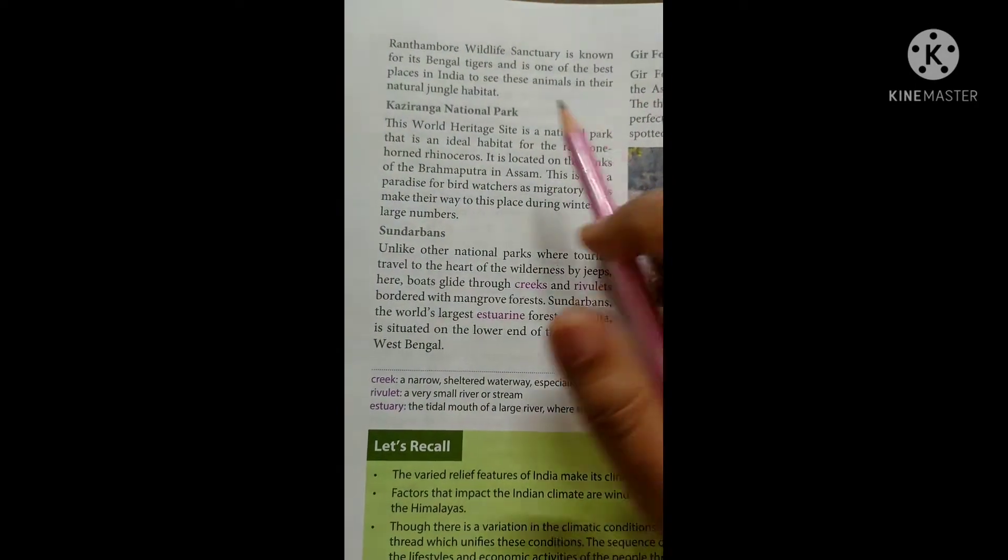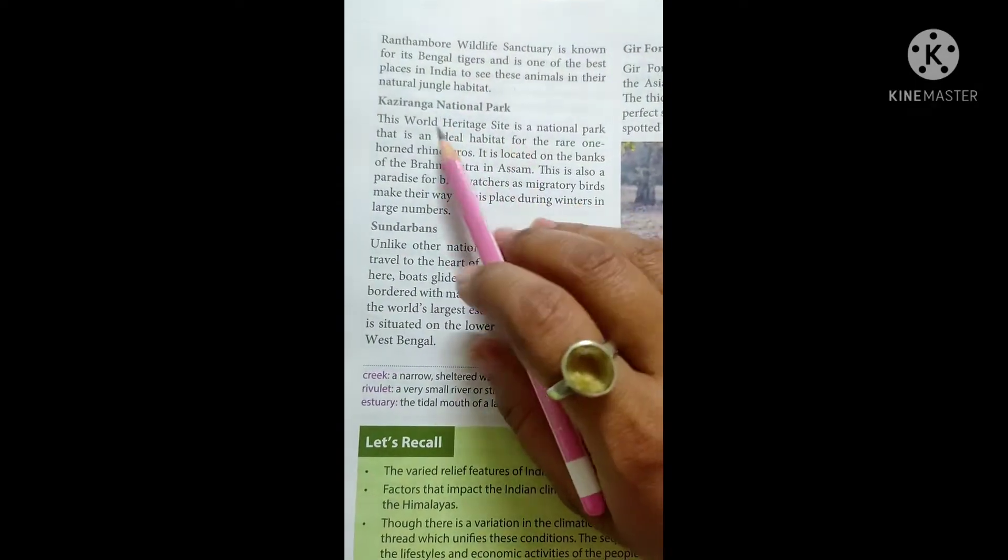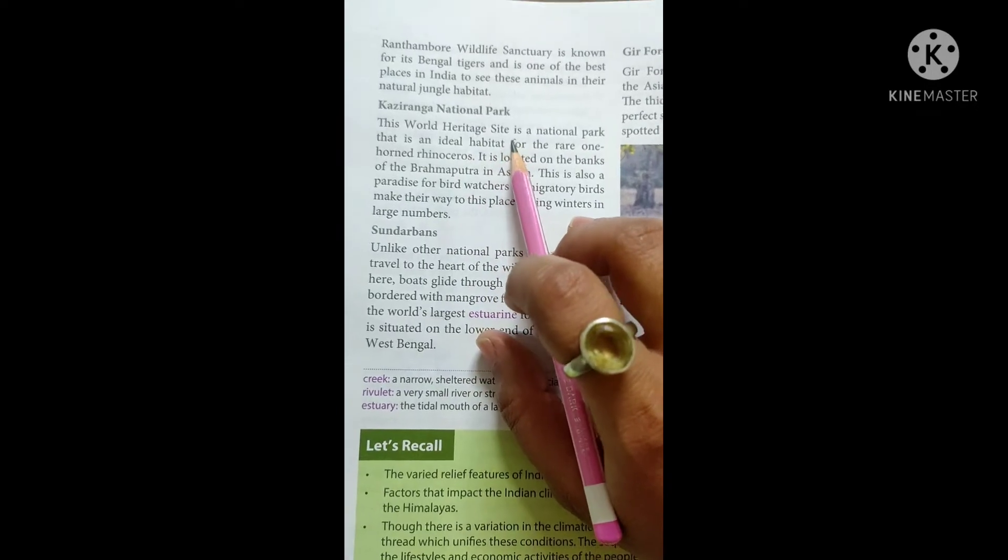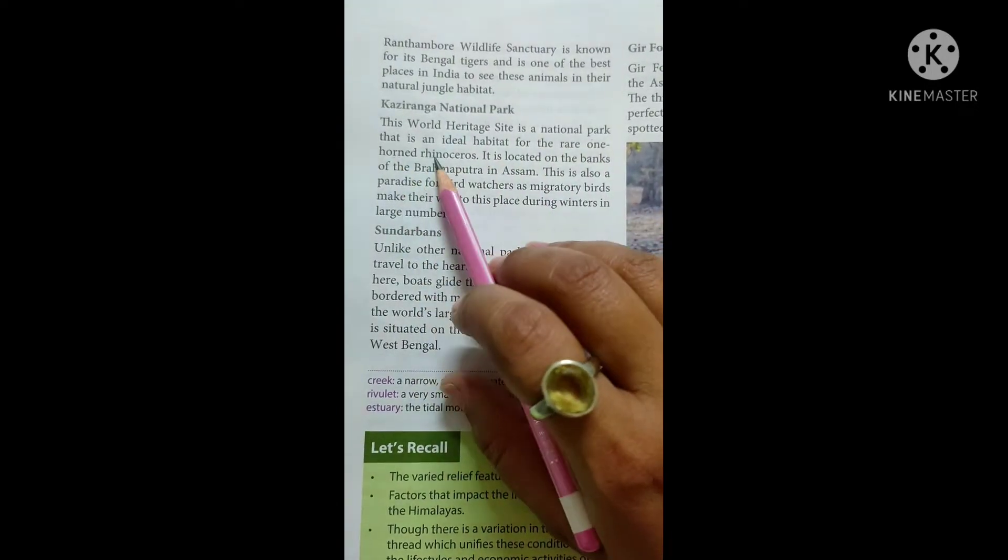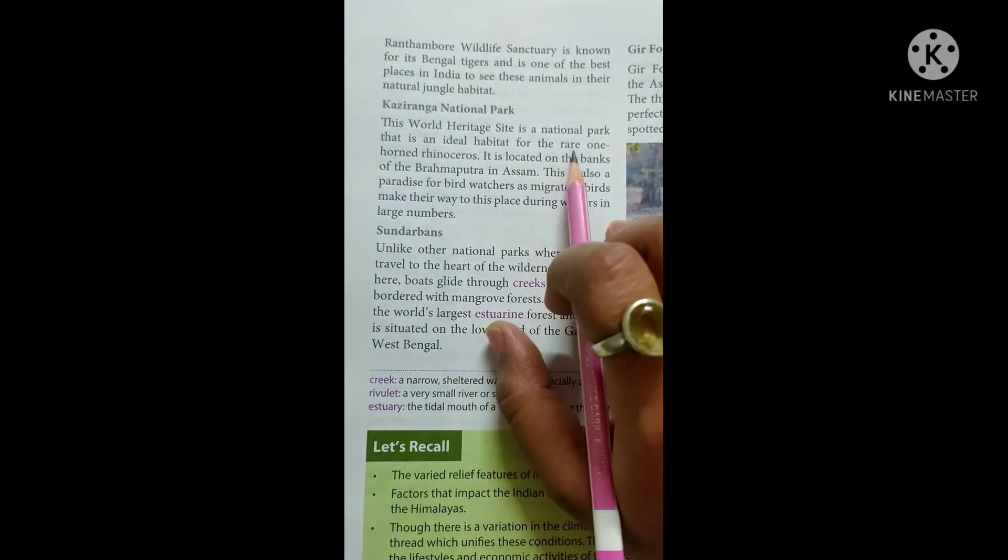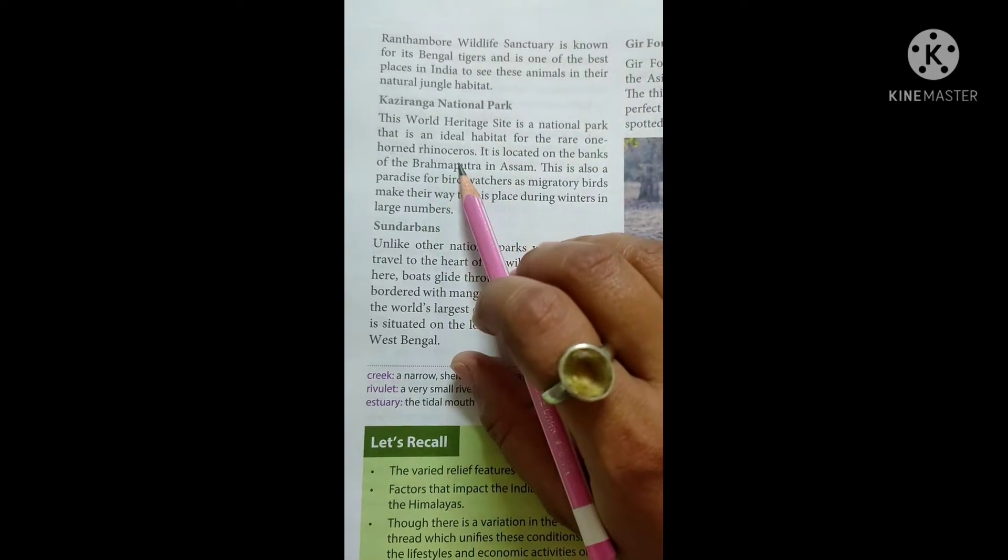Next national park is Kaziranga National Park. The World Heritage Site is a national park that is an ideal habitat for the rare one-horned rhinoceros.